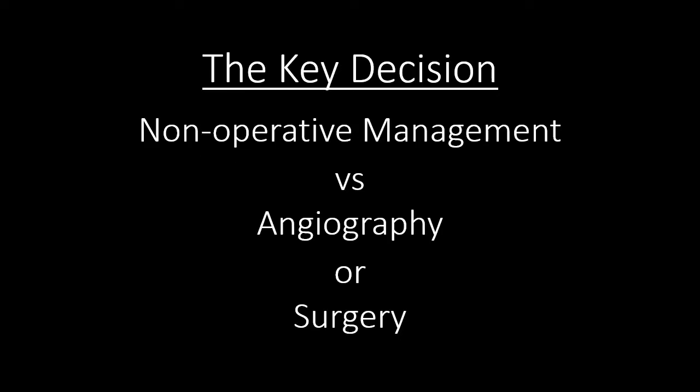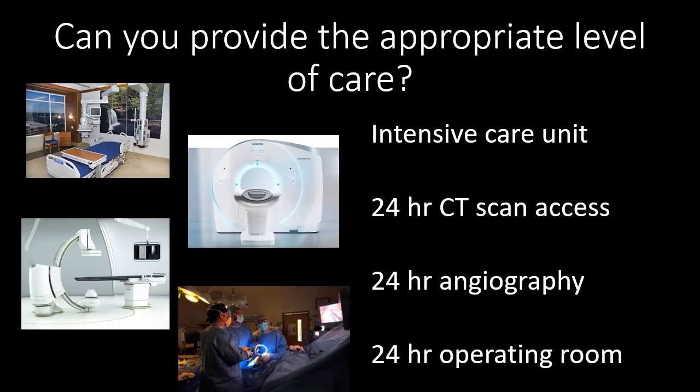The main decision you're trying to make when evaluating somebody who's been part of blunt abdominal trauma is whether they can be non-operatively managed, whether they're going to require some sort of angiography to stop bleeding or other vascular complications, or whether they're going to require surgery. Before you make these key management decisions, you have to understand what type of facility you're practicing in and whether or not they have the appropriate level of care to manage a critically ill trauma patient.